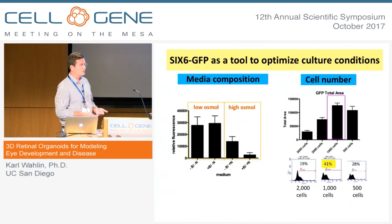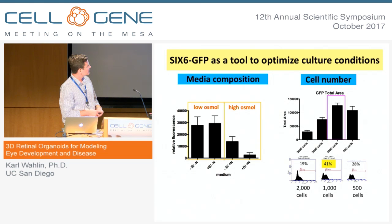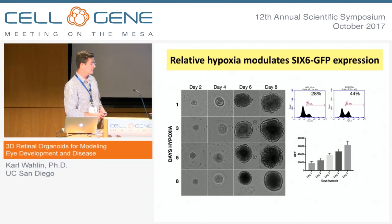We also tested the number of cells in the aggregate. Typically in the literature, people use between 3,000 and 12,000 cells. We wanted to know how low we could go, since a lower cell number means we can scale up more easily. Going down from 3,000 to 500, we found that 1,000 cells gave us the best GFP signal, so we can now scale up quite a bit more.